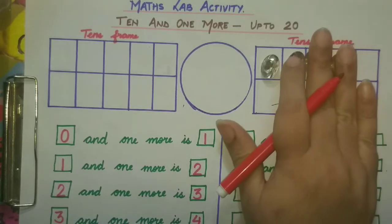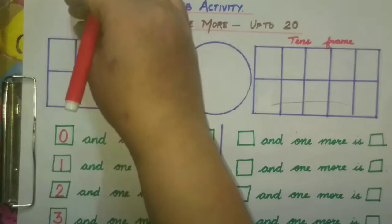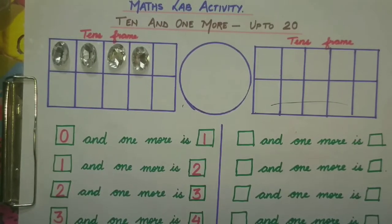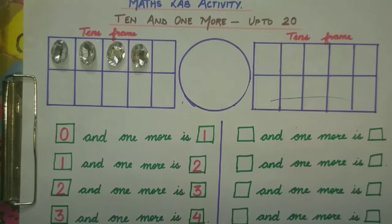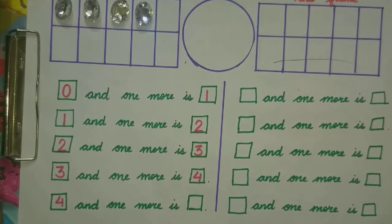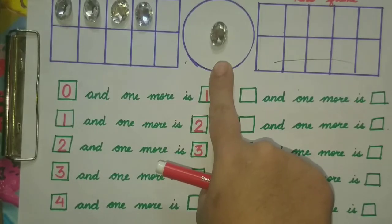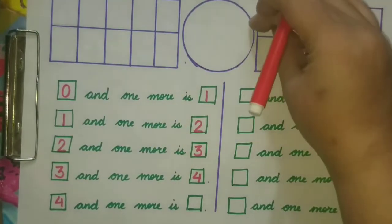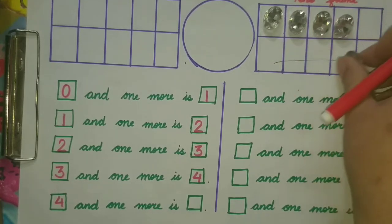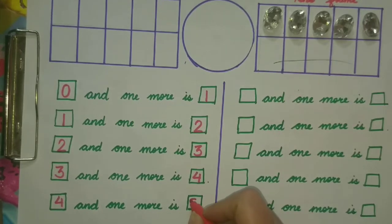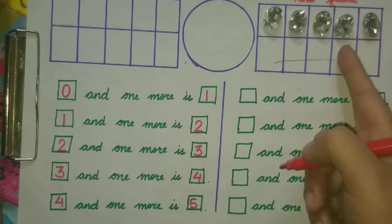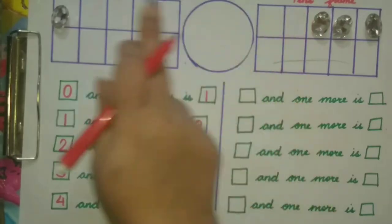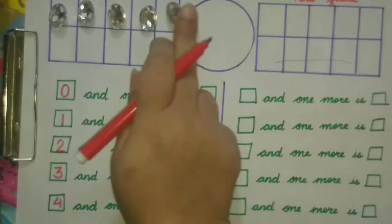So we will bring them to the first ten frame now for our next question. Our next number is 4. 4 and 1 more — to find out, we will bring them together in the second frame. So 4 and 1 more is 5. Now we will bring them to the first frame for the next question.